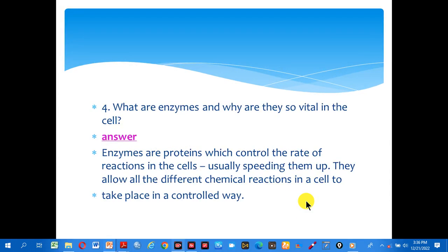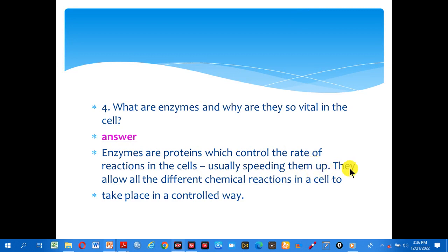Okay, number four: what are enzymes and why are they so vital in the cell? The answer is: enzymes are proteins which control the rate of reaction in the cell, usually speeding it up. They allow all the different chemical reactions in a cell to take place in a controlled way.